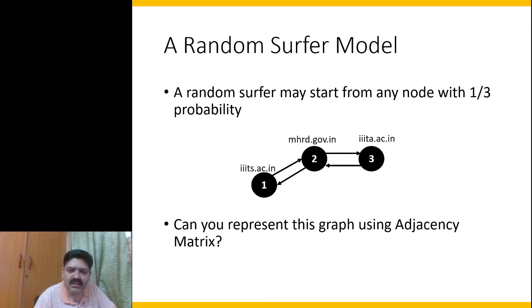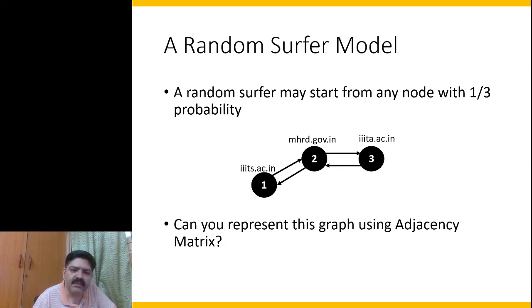Let's say node one is iiits.ac.in, node two is mhrt.gov.in, and node three is iiita.ac.in — some page in each of these websites. The existence of a link from one website to another is marked with an arrow. So if you are on the landing page of iiits.ac.in, there is a link to mhrt.gov.in, and from mhrt.gov.in there are links to both iiits.ac.in and iiita.ac.in.